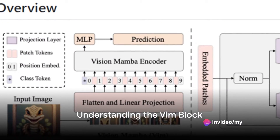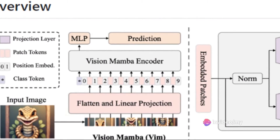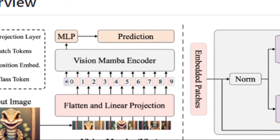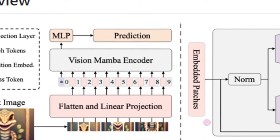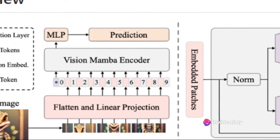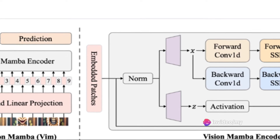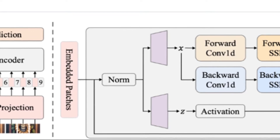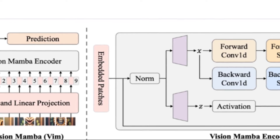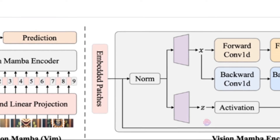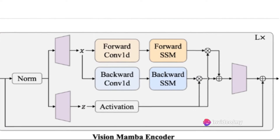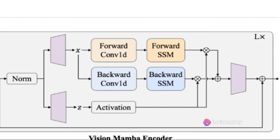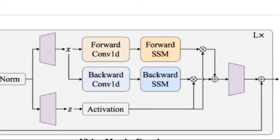To understand how Vision Mamba works, we need to delve into its heart: the Vim block. Vim, short for bidirectional Mamba blocks, tags image sequences with position embeddings and compresses the visual representation with bidirectional state-space models. It all begins with the normalization of the input token sequence, followed by a linear projection. The hidden state dimension D and expanded state dimension E are set based on the sizes of DIT series.